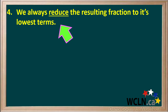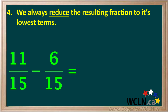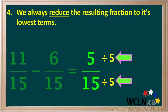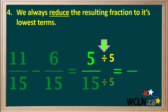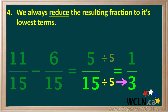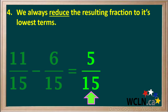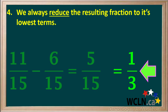The fourth thing we must remember is, if the resulting fraction can be reduced, we must always reduce it to its lowest terms. For example, if we're subtracting 6 fifteenths from 11 fifteenths, 11 minus 6 is 5, so the answer comes out to 5 fifteenths. But notice that both 5 and 15 can be divided by 5: 5 divided by 5 equals 1, and 15 divided by 5 equals 3. So the answer in its lowest terms is 1 third. To summarize, 11 fifteenths minus 6 fifteenths equals 5 fifteenths, which is reduced to 1 third.